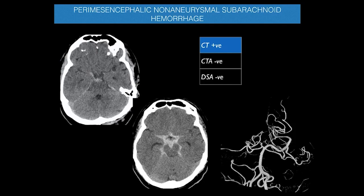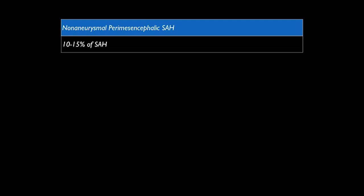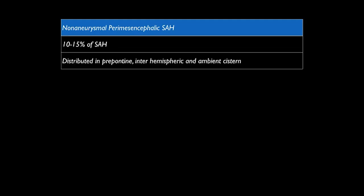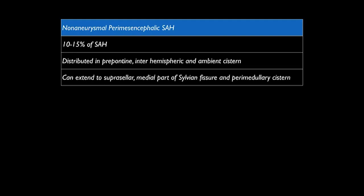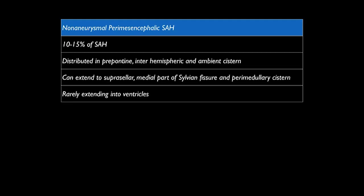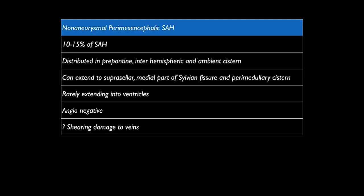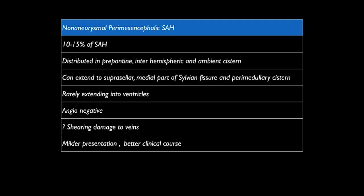The most common cause of basal subarachnoid bleed is perimesencephalic non-aneurysmal subarachnoid hemorrhage, where CT head is positive but CT angiogram and DSA are both negative. It represents about 10–15% of SAH. Distribution is classically within the prepontine, interhemispheric, and ambient cisterns, with occasional extension into the suprasellar cistern, medial sylvian fissure, perimedullary cistern, and ventricles. It is always angio-negative, possibly due to shearing damage to veins. Presentation is much milder and clinical course much better, with patients usually feeling well within days.